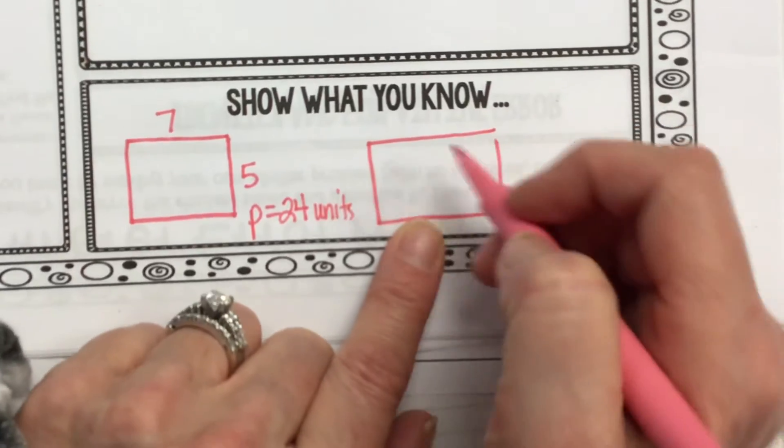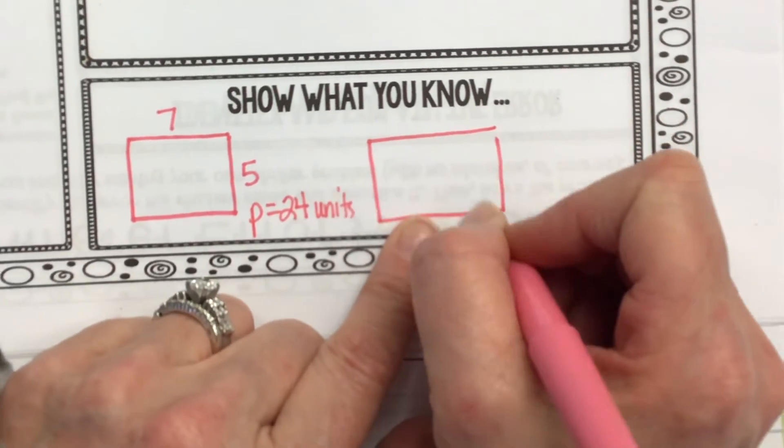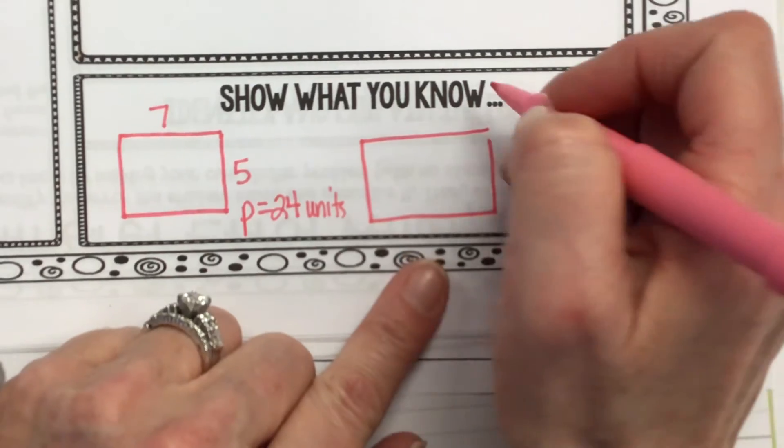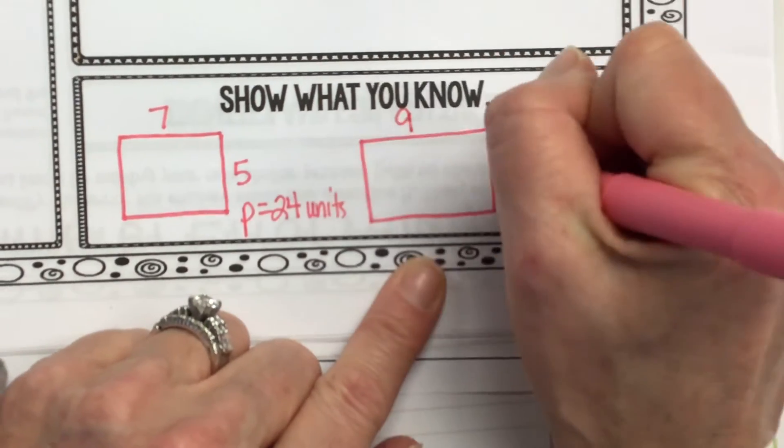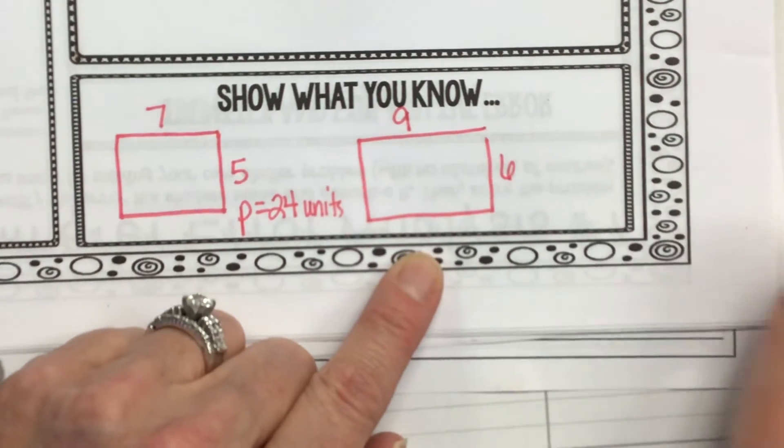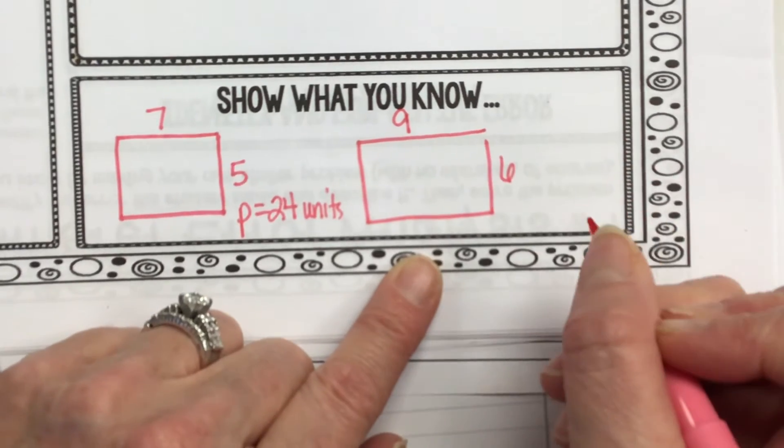Seven plus five is 12. If you double that, it's 24. So, tell me what were the dimensions of the rectangle you chose to draw, Morgan? Nine by six. Nine by six. That would have a perimeter of what, Morgan? 30.